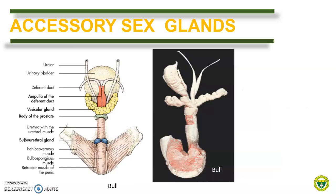The accessory sex glands are located along the pelvic portion of the urethra. Their presence varies between species and can include the ampullary gland, the vesicular gland, the prostate gland, and the bulbo-urethral or Cowper's gland. In this slide, we can see the accessory sex glands of a bull — all four mentioned glands are present.